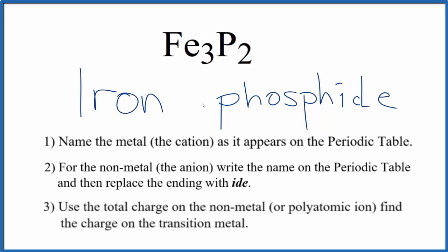So far, we have iron phosphide as the name for Fe3P2, but we said iron, that's a transition metal. So we need to put Roman numerals between here with the charge on iron.